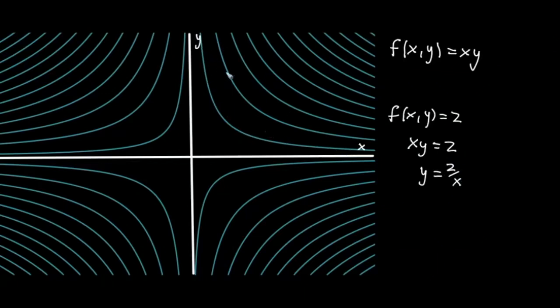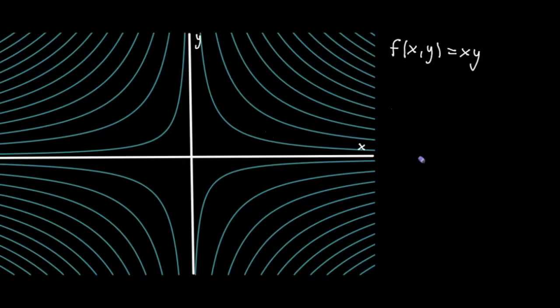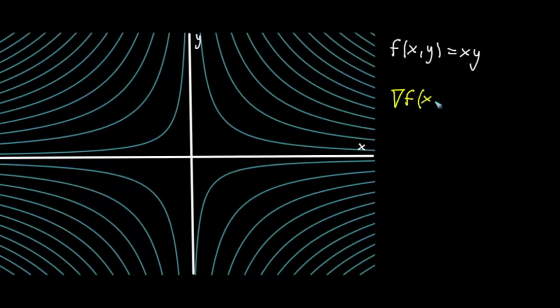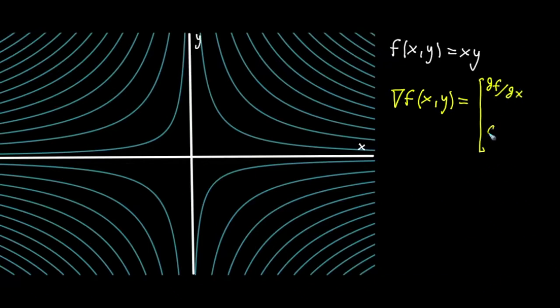Now I want to take a look at the gradient field. The gradient, if you'll remember, is just a vector full of the partial derivatives of f. The gradient of f, with our little del symbol, is a function of x and y. It's a vector valued function whose first coordinate is the partial derivative of f with respect to x, and the second component is the partial derivative with respect to y.